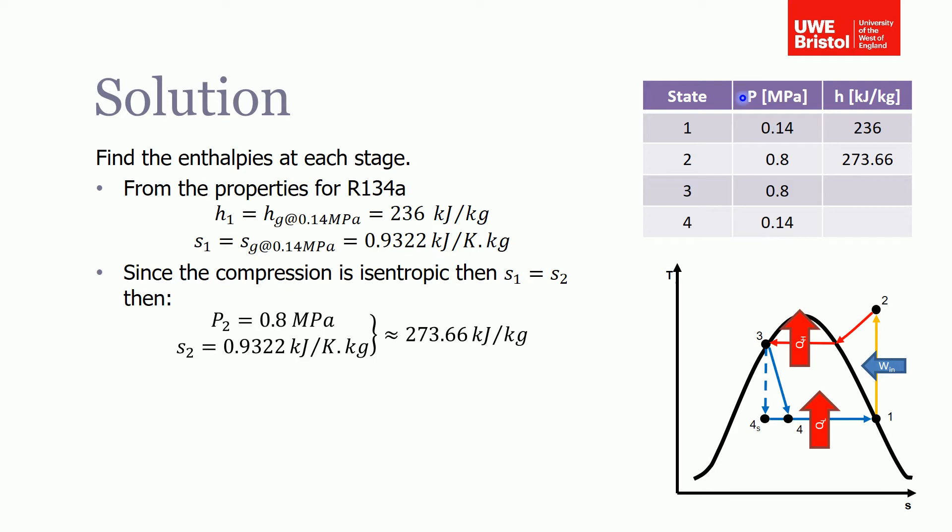I suggest you set up a little table as well, so here I've got state 1, 2, 3, 4, my pressures. I know the pressure at point state 1 and 4 is 0.14 megapascals and 2 and 3 is 0.8. Now I've got another column for the enthalpies which I'll populate as I calculate them.